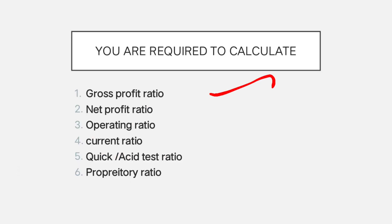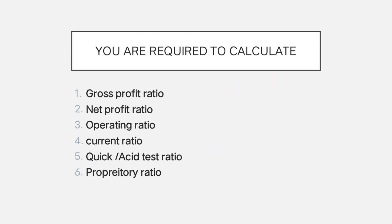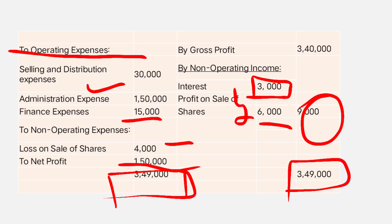We need to calculate six ratios: gross profit ratio, net profit ratio, operating ratio, current ratio (also known as working capital ratio), quick ratio (also called acid test ratio or liquid ratio), and proprietary ratio.